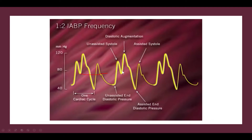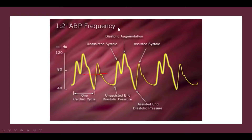Then right before the next dicrotic notch, you see the balloon inflating again with a nice augmentation, followed by deflation. Whatever follows the deflation is your assisted systolic. On the next beat going through the diastolic phase, the balloon pump does not inflate, giving you the dicrotic notch followed by unassisted diastole. This is what it looks like when augmented every other beat in one-to-two mode.